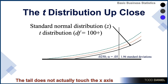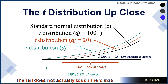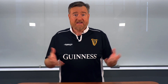What we see with the thicker tails is that instead of 5%, a distribution with 20 degrees of freedom has 6.5% of scores beyond 1.96. And with 10 degrees of freedom, nearly 8% of scores are beyond 1.96 — the area that's supposed to be only 5%. So how do you fix that?